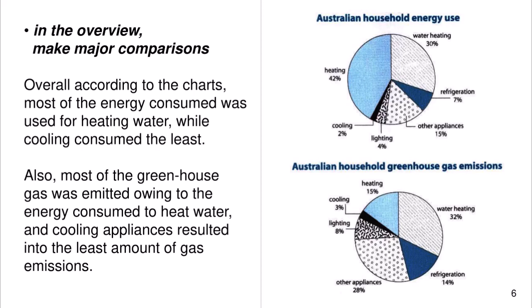Now in the overview, make major comparisons. Overall, according to the charts, most of the energy consumed was used for heating water, while cooling consumed the least. Also, most of the greenhouse gases were emitted owing to the energy consumed to heat water, and cooling appliances resulted in the least amount of gas emissions.